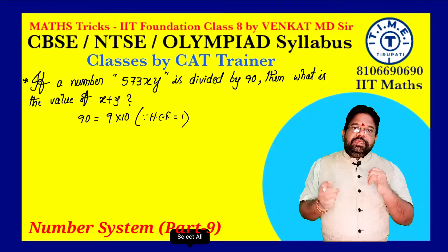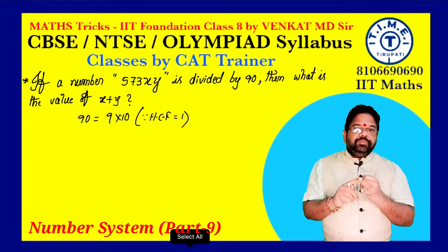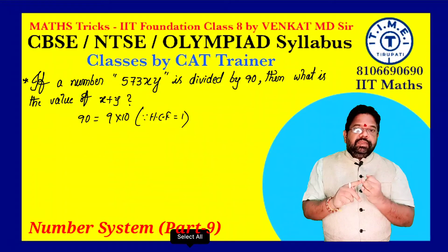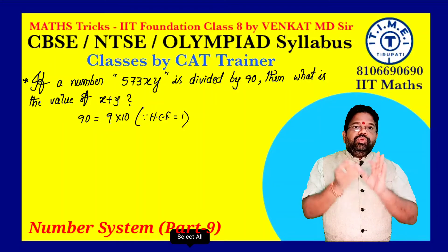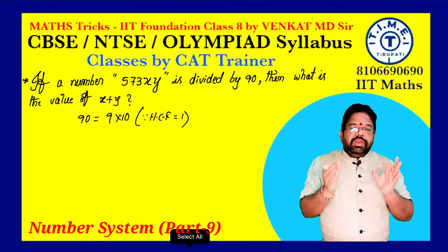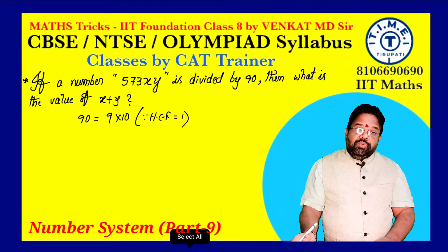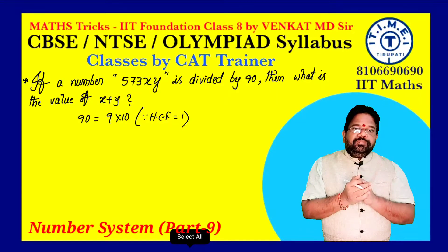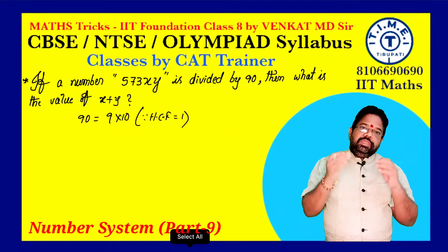If the given number is exactly divisible by both 9 and 10, that number must be exactly divisible by 90. So you have to check whether the given number is exactly divisible by 9 and 10. When the given number is divisible by 10, recall the divisibility test from seventh class.